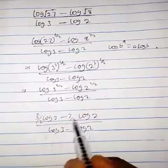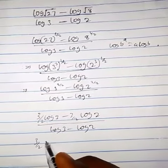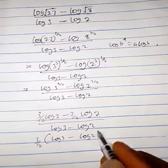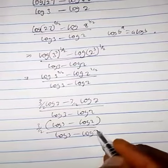You observe something in the numerator: 3 over 2 is common, so we factor it out. We have 3 over 2 into log 3 minus log 2, everything over log 3 minus log 2.